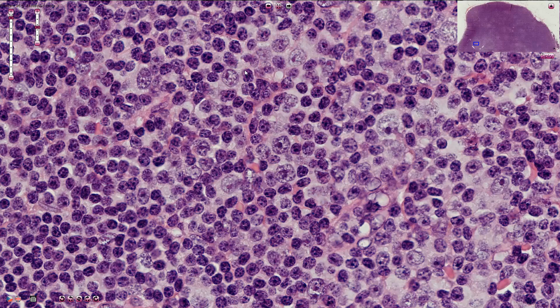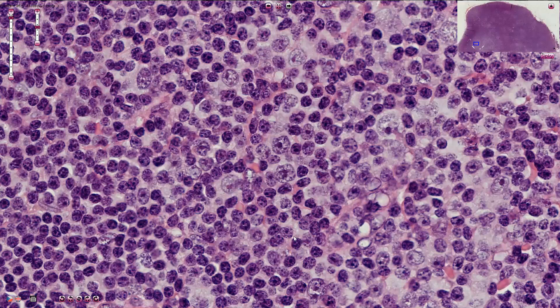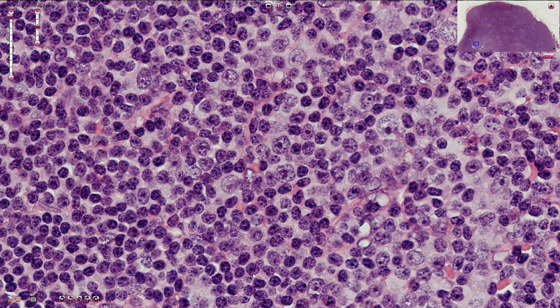So para-immunoblasts are here, here, here, and here, and the other cells are prolymphocytes.